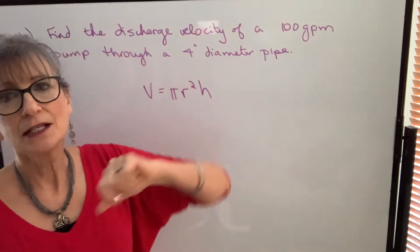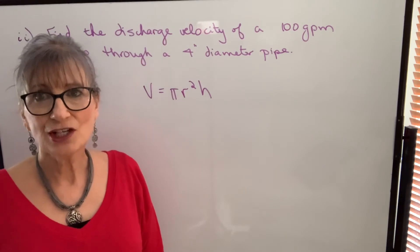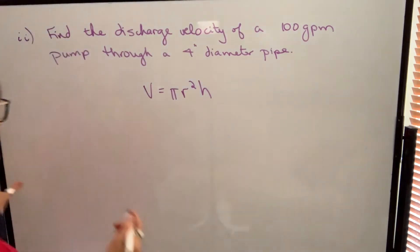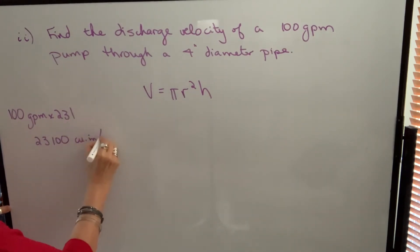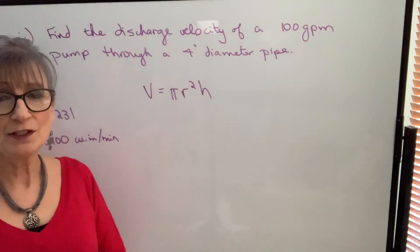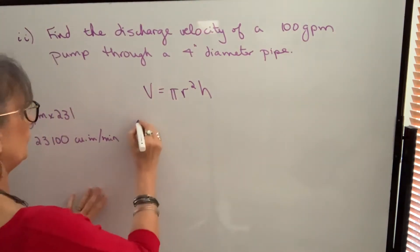But the biggest thing is the units. So 100 gallons per minute. Gallons is not a volume unit. It's a capacity unit. So we need to change that to cubic inches. So 100 gallons would be equivalent to 23,100 cubic inches. And we're dealing with the time factor per minute.